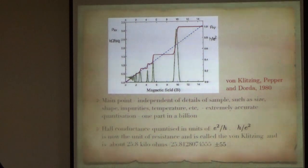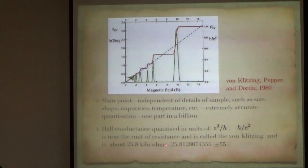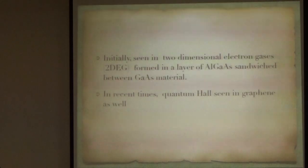The Hall conductance is quantized in units of e squared over h, and the Hall resistance h by e squared is now the unit of resistance, and it is called the von Klitzing, and it is about 25.8 kilo ohms. As I said, it is known extremely accurately.